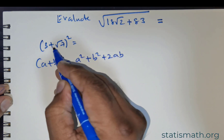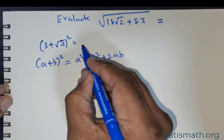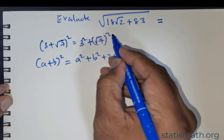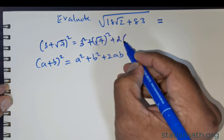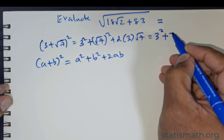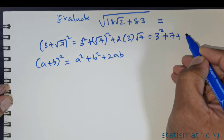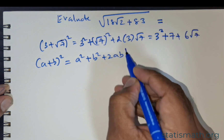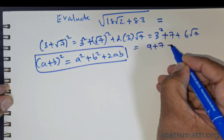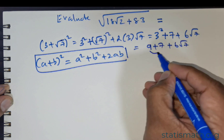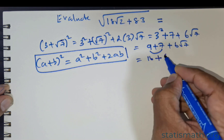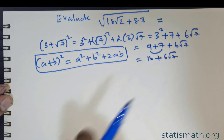If I were to do the same for (3 + √7)², this would give me 3² + (√7)² + 2 × 3 × √7, which is 9 + 7 + 6√7. I can rewrite this as 9 + 7 + 6√7, and 9 and 7 combine to give 16 + 6√7. So this is what we have got.